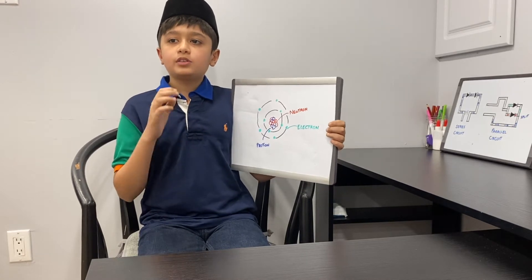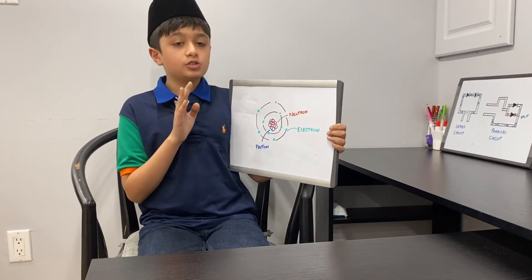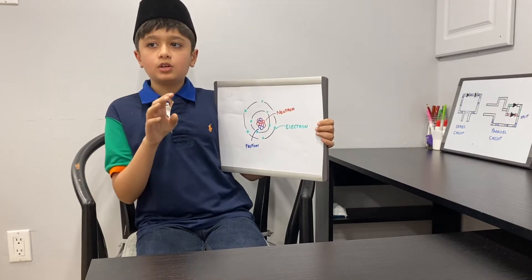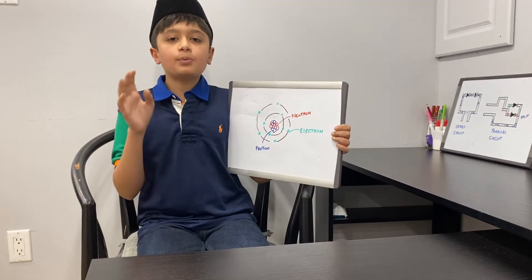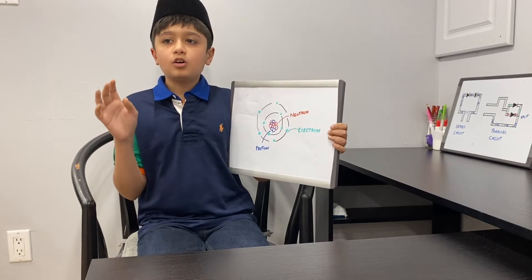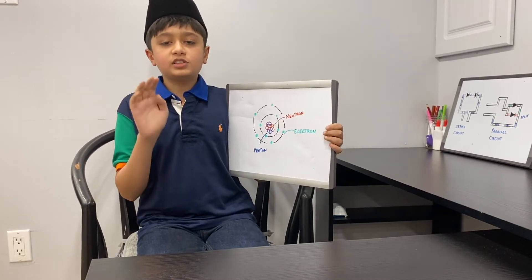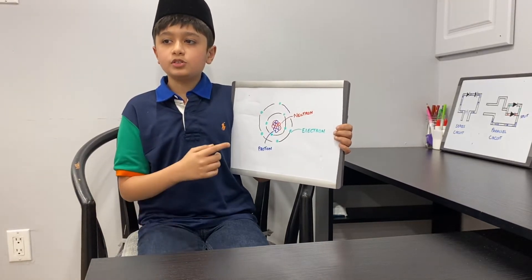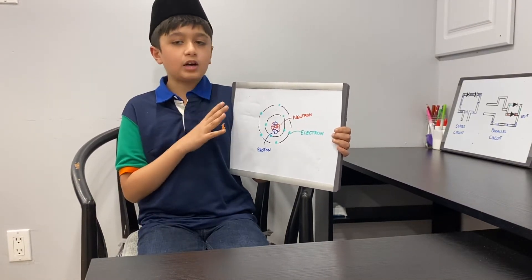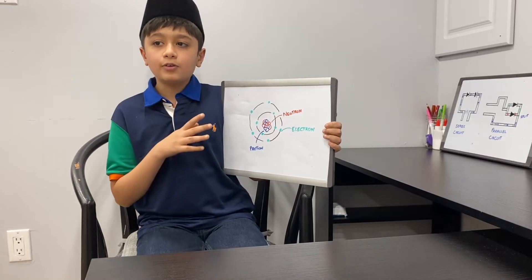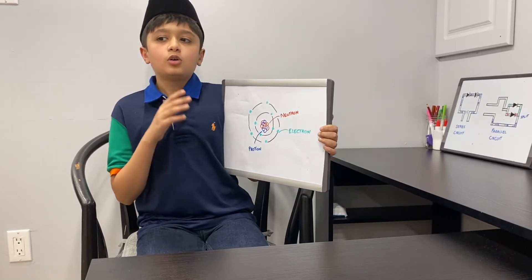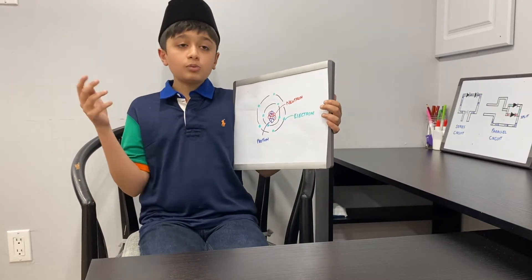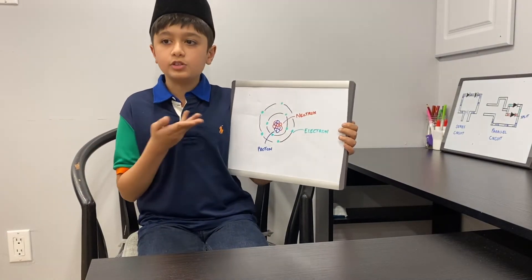In some materials, electrons can escape by hopping from one atom to another. It's these hopping electrons which make all the electrical gadgets in our life possible. Moving electrons power everything from calculators to cell phones to microwave ovens. Take a look around your house and imagine all the wires full of hopping electrons whizzing all around you.